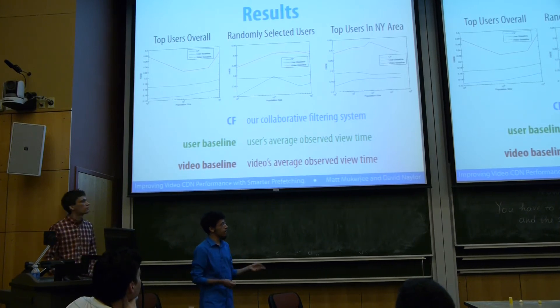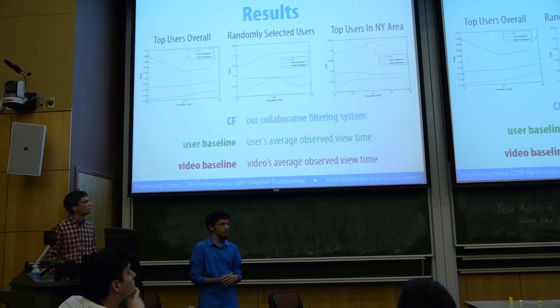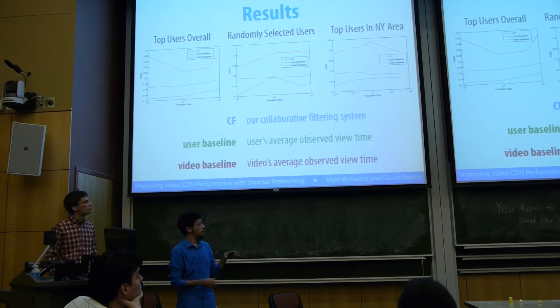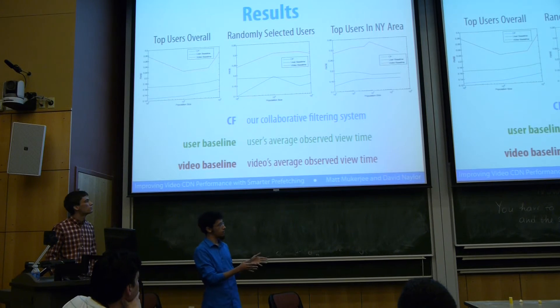We'll see in all three graphs, we're the blue. We do much better than the other two baselines by a good amount. We reduce error, so this is root mean squared error, by about 22%. What this means is that even within the area of a specific ISP, our system provides better recommendation than these baselines.